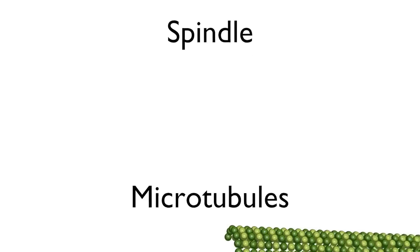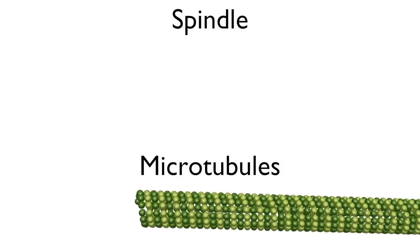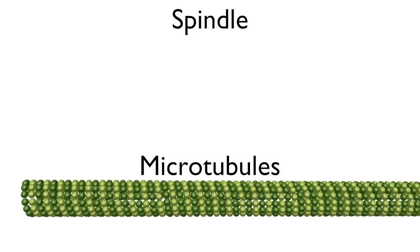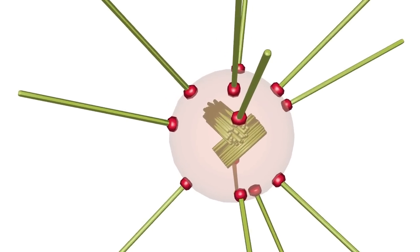Second, the spindle has to form. The spindle is made of microtubules that will ultimately move the chromosomes during mitosis. The microtubules emanate from structures called centrosomes.